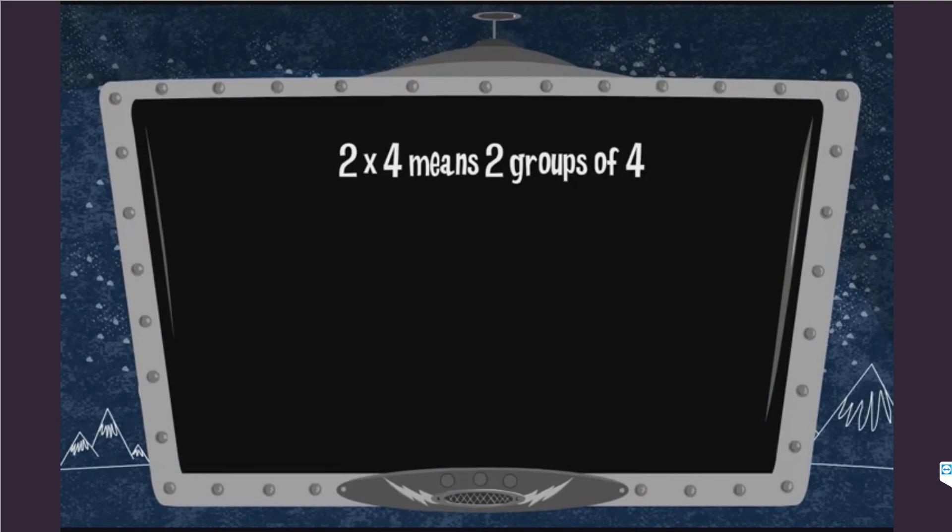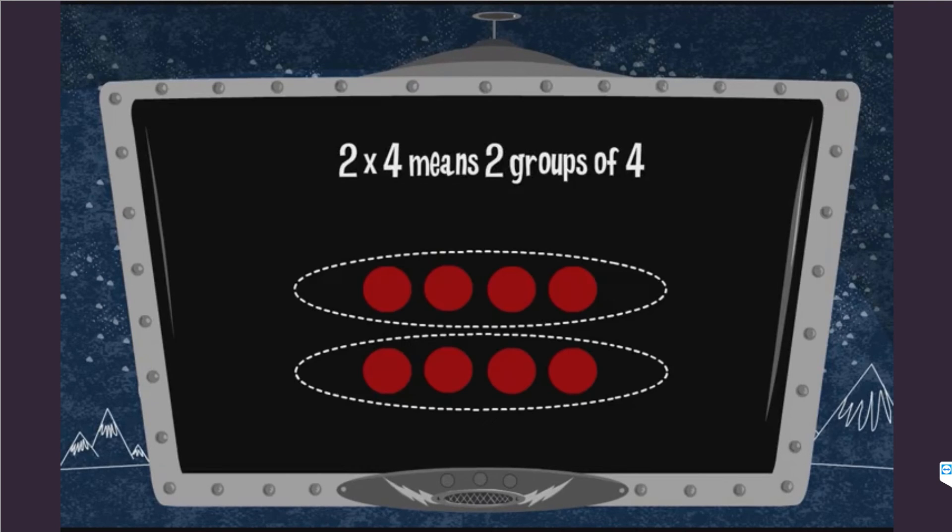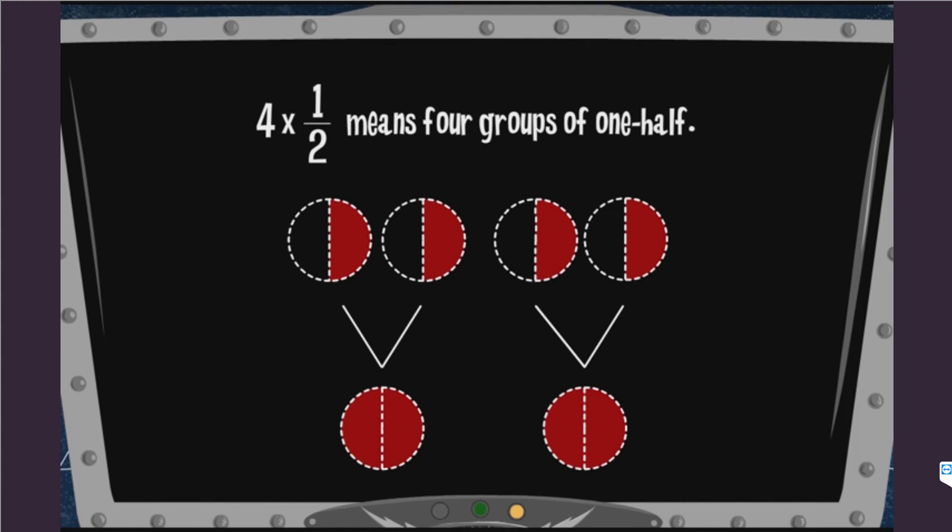You know that 2 multiplied by 4 means 2 groups of 4. 2 multiplied by 4 equals 8. So what happens when we multiply fractions? If we multiply 4 by 1 half, that means we're looking for 4 groups of 1 half. Notice that 4 groups of 1 half equal 2. That's the same as asking what 1 half of 4 is.